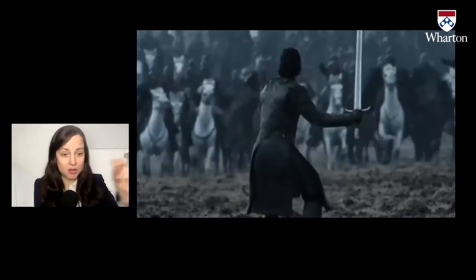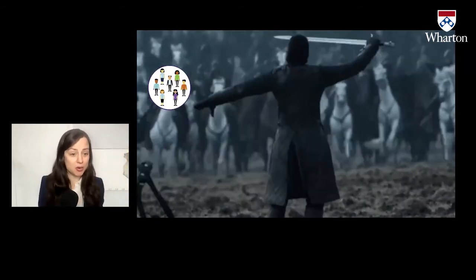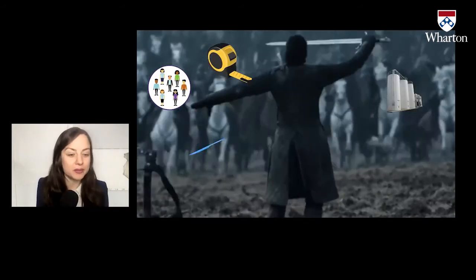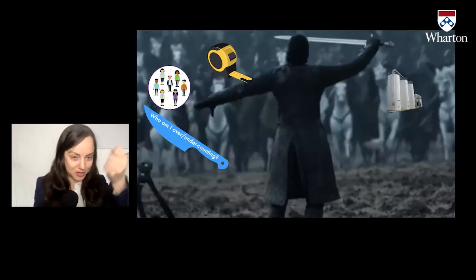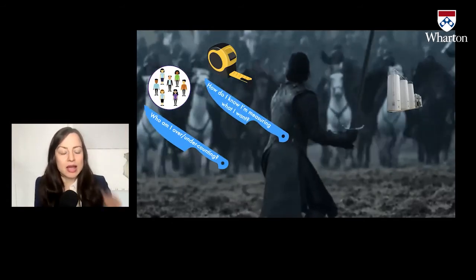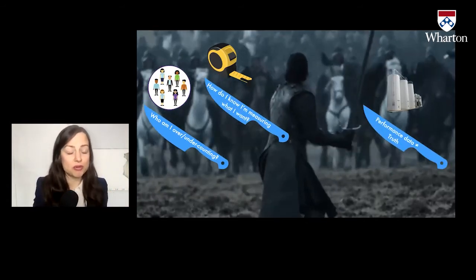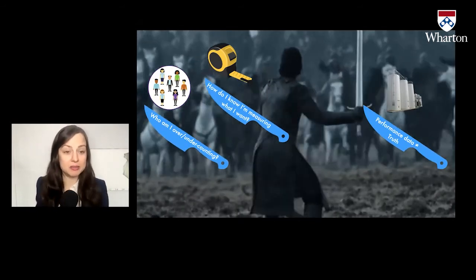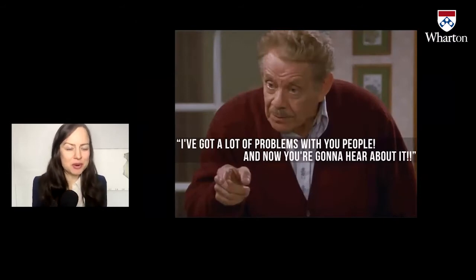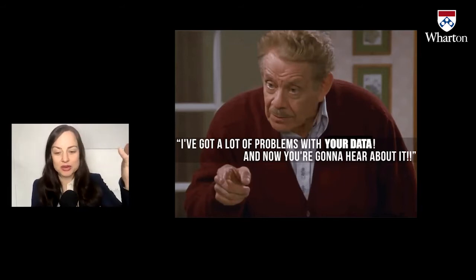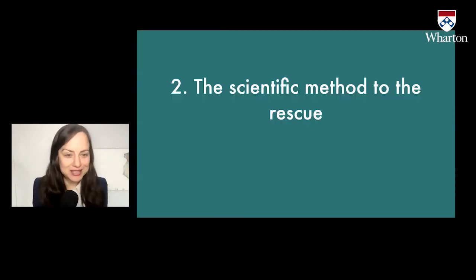To sum up — this is a long one, the rest will be shorter, but this is a big point. Here are the battles that we're fighting with our data: there's selection bias, there's measurement issues, there's siloing the results. Ask: who am I over and under counting in my data? How do I know I'm measuring what I want? Remember, performance data does not equal truth. Data about your people is data about your people — we don't have to keep it in separate categories. This is pretty much the Andrea Jones-Roy consulting experience: I have a lot of problems with your data, and you're going to hear about it.